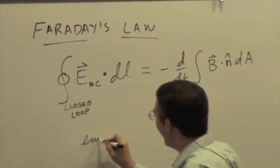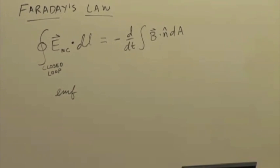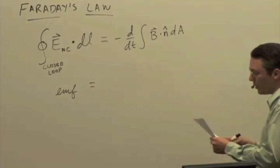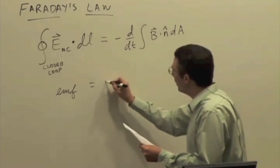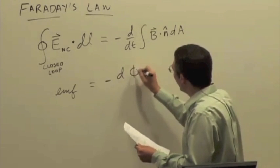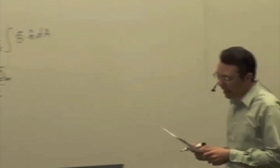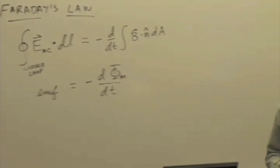We can also write this: a round trip work per unit charge is what we call an EMF. So this really is an EMF — work per unit charge by a non-Coulomb force. We can also use the symbol phi sub m to indicate magnetic flux. So that is Faraday's Law. And we were looking at the pattern and direction specifically of the non-Coulomb electric field that's present when you have a changing magnetic field.